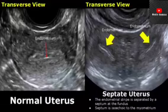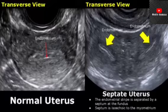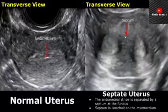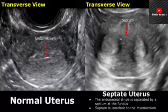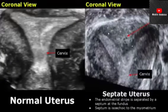In a septate uterus, the endometrial stripe is separated by a septum at the fundus. In transverse view, the septum divides the endometrial stripe and is isoechoic to the myometrium. In coronal view, we can see a thick isoechoic septum in the middle of the uterine cavity.